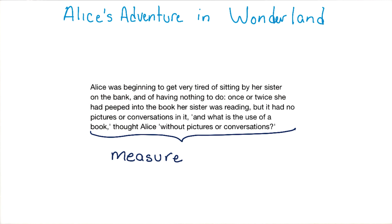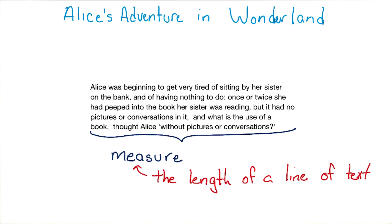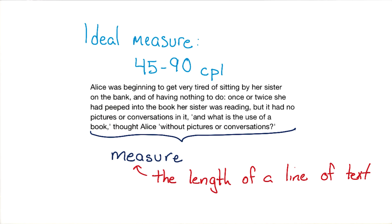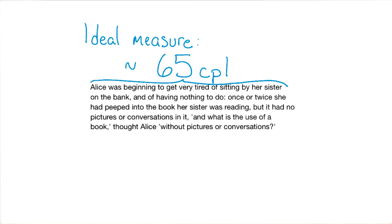Over the last century, there's been lots of research done to determine the ideal measure — that's the technical term for the length of a line. I've seen research ranging from 45 characters per line to as many as 90 characters per line, depending on the font used, if it's in print, if it's projected, or on a computer screen. But there seems to be a pretty solid consensus around 65 characters per line for the web. It's not a hard and fast rule, but it's a good place to start.